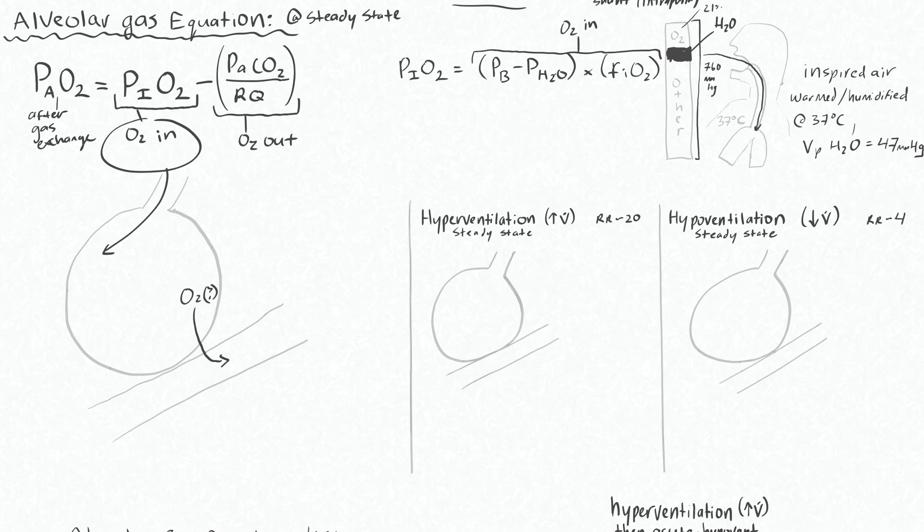Therefore we need to account for this when we calculate an accurate inspired pressure of oxygen. So here we would say 760 millimeters of mercury minus 47, which is the water, times 0.21 gives us 150 millimeters of mercury. So this will be our PIO2. And again that's because this water vapor has diluted the O2 down from what was originally 160 millimeters of mercury.